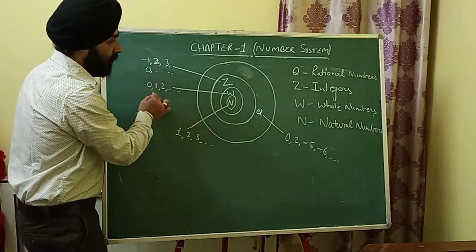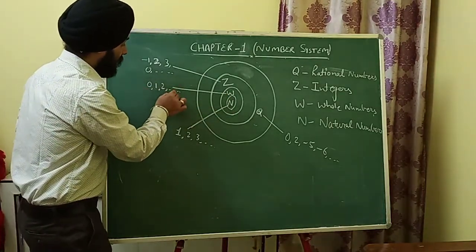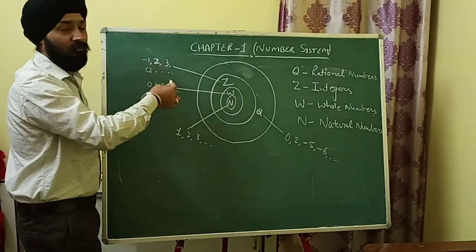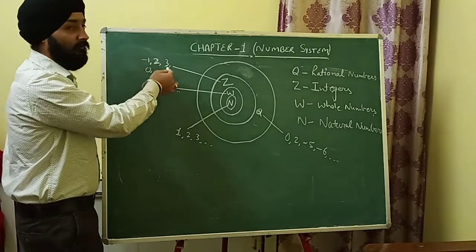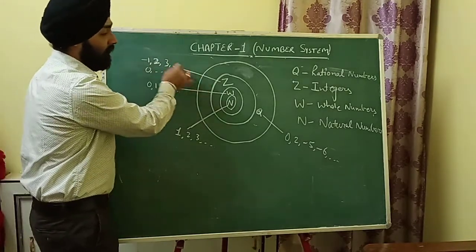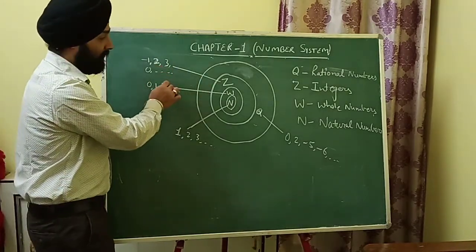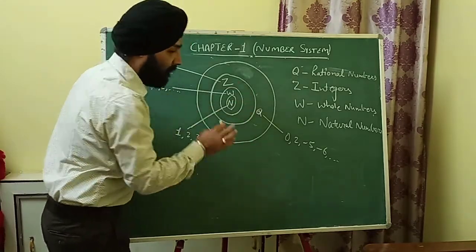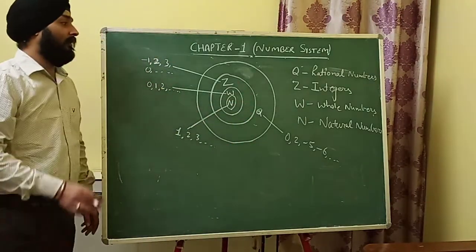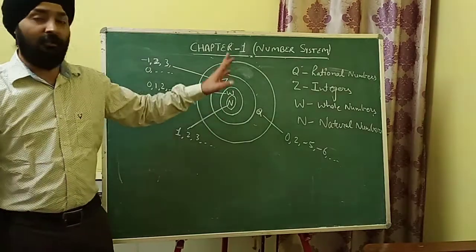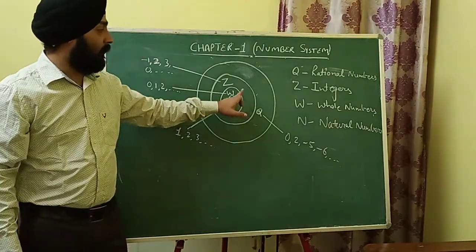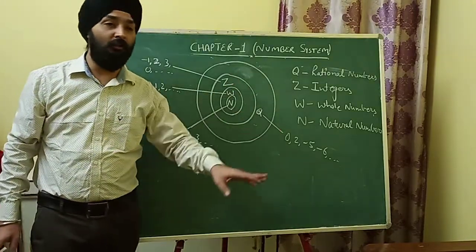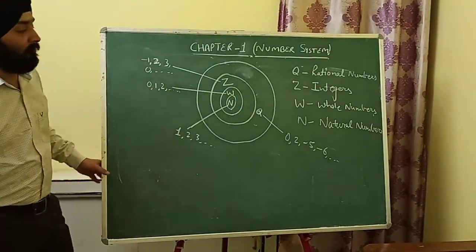From the diagram: integers Z — like -1, -2, -3, 0, 1, 2, 3 — are also rational numbers. So we can say: all natural numbers are also rational numbers, all whole numbers are also rational numbers, and all integers are also rational numbers.